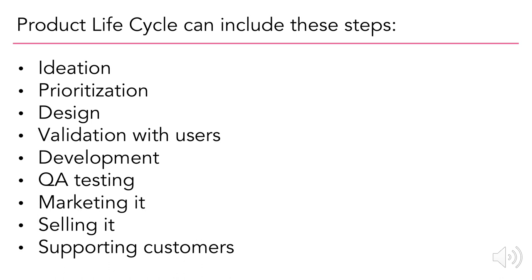Once we do have something validated, we then start to develop it. Development happens in tandem with QA testing, which is just making sure that the system will respond to any number of sequences, any number of data sets, any number of mouse clicks in some order that makes sense. QA testing is just making sure there are no bugs, essentially.